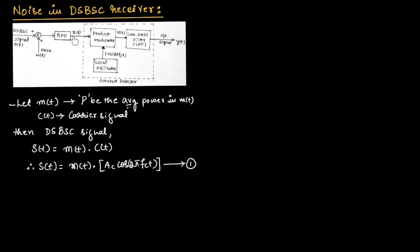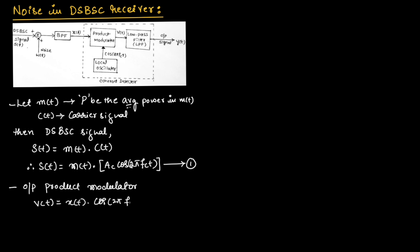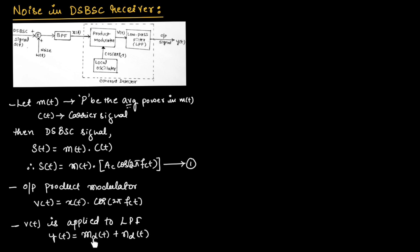X(t) is multiplied with the signal cos(2π·fc·t) by a product modulator to produce V(t). Therefore, the output of the product modulator is V(t) = X(t)·cos(2π·fc·t). This V(t) is applied to a low pass filter to produce output Y(t), which equals the demodulated message signal M_D(t) plus the demodulated noise N_D(t). This is the output of the low pass filter.